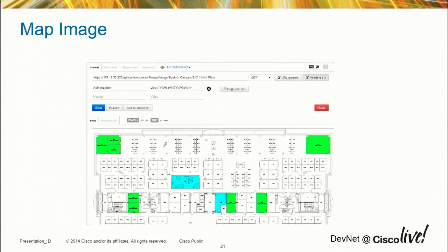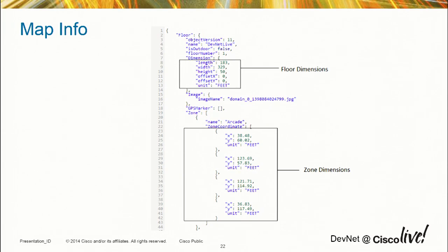Here's an example of me downloading a map from our building — fourth floor. I included the campus, building, and floor, and downloaded an image. I can use that image however I want in my service. What's nice is if we change the image or make adjustments, you have a REST API to pull that out without a problem. The map info also gives you dimensions, floor number, whether it's outdoor, and whether it has GPS markers for geolocation. We recommend placing three geolocation markers in the building so we can give you not only X and Y coordinates but also geolocation. You can also get zone information if you've defined zones.